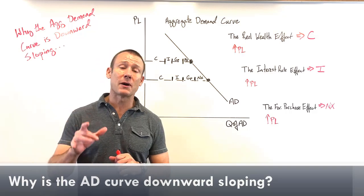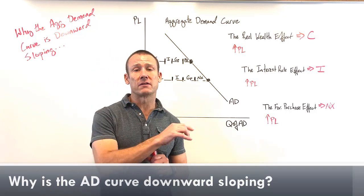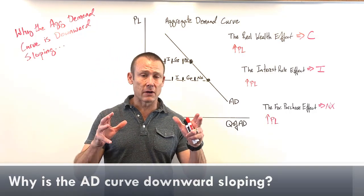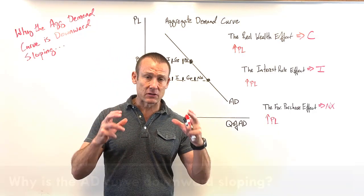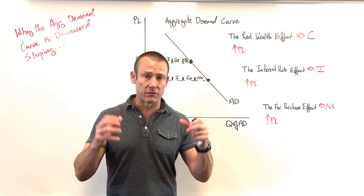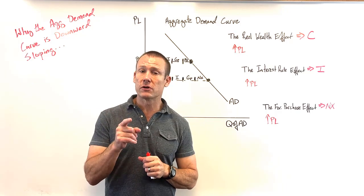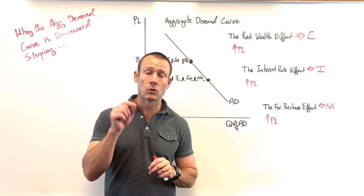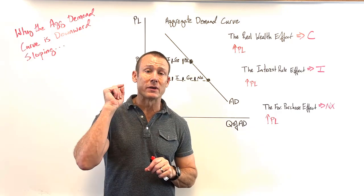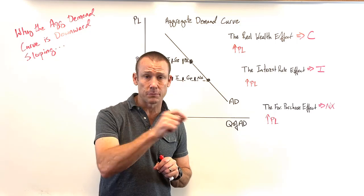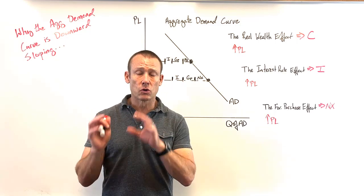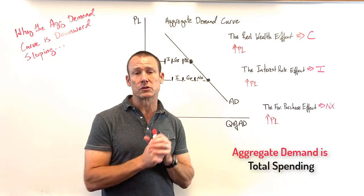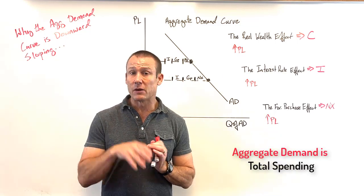In this video we're talking about why aggregate demand is downward sloping. First, what is aggregate demand? It is total spending on domestically produced goods and services.